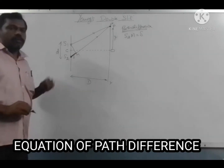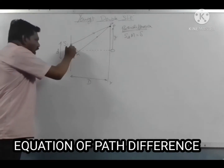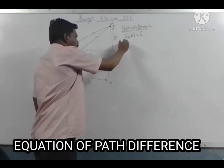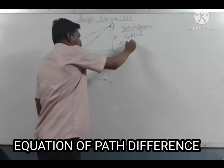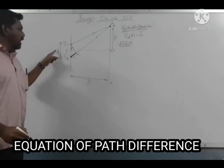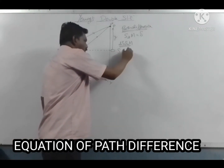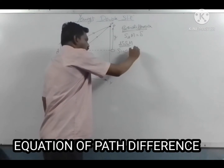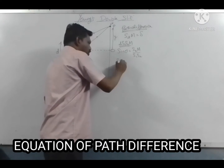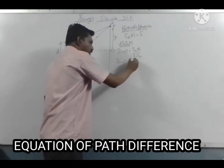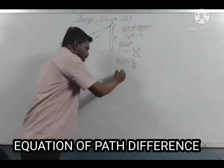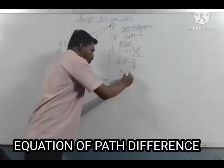From the triangle S1, S2, M, using the angle theta: sin theta equals opposite over hypotenuse, which gives sin theta equals delta over d. Since theta is small, sin theta can be taken as theta itself, so theta equals delta divided by d.